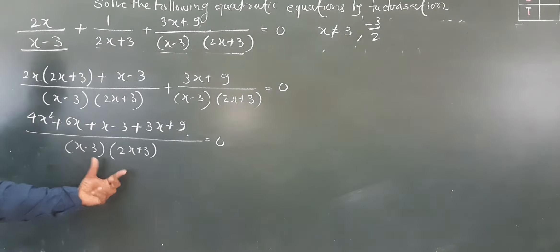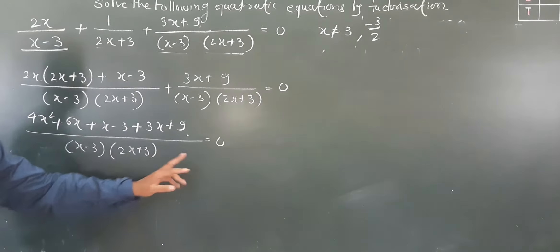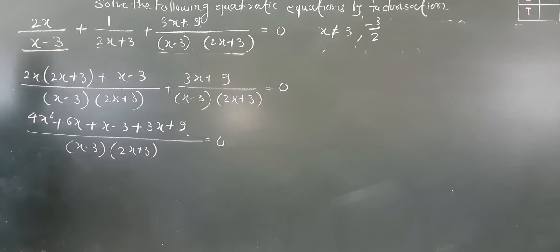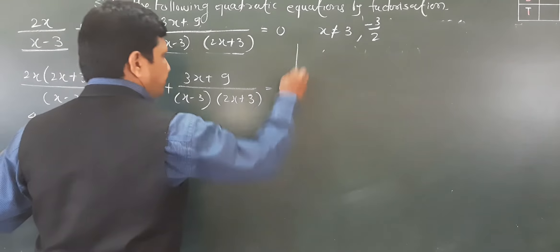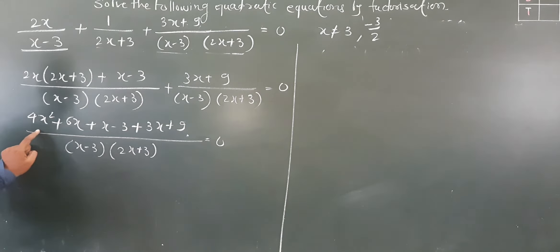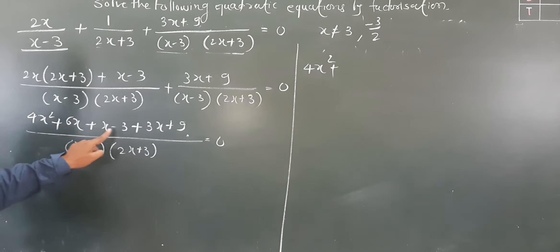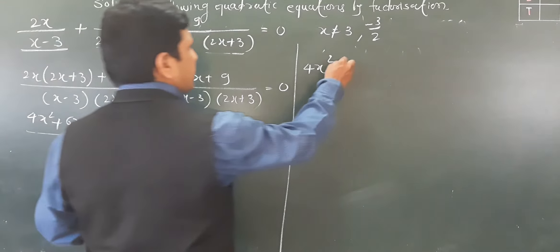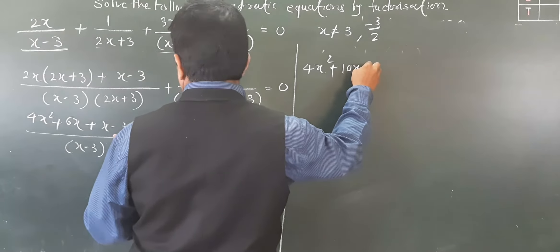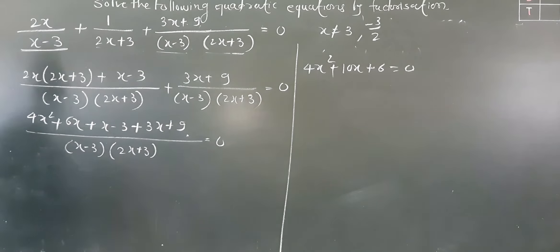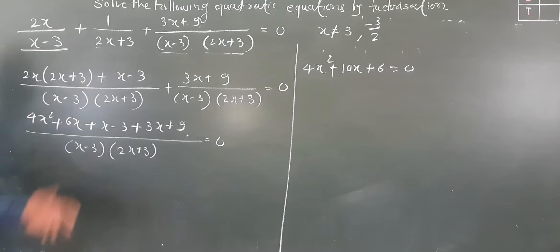Since the denominator is multiplied to the right-hand side which is 0, the denominator drops out and only the numerator remains. Combining like terms: 4x² is a single term; 6x + x + 3x = 10x; and −3 + 9 = 6. So we have 4x² + 10x + 6 = 0, which is the quadratic equation we need to factorize.